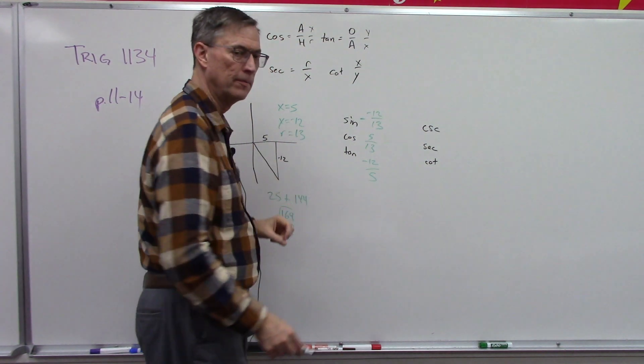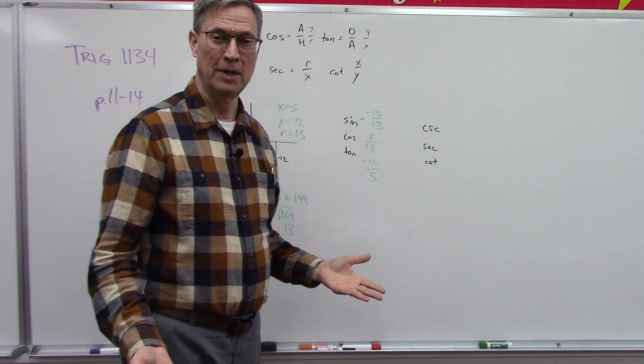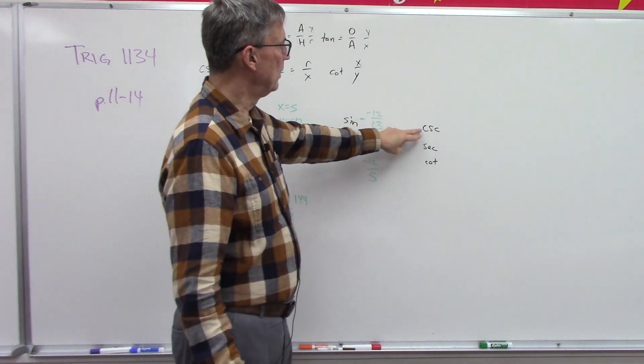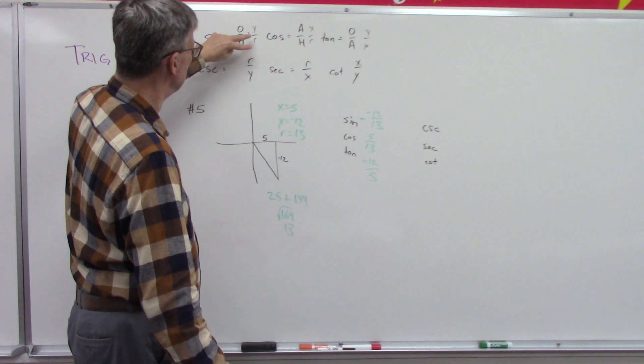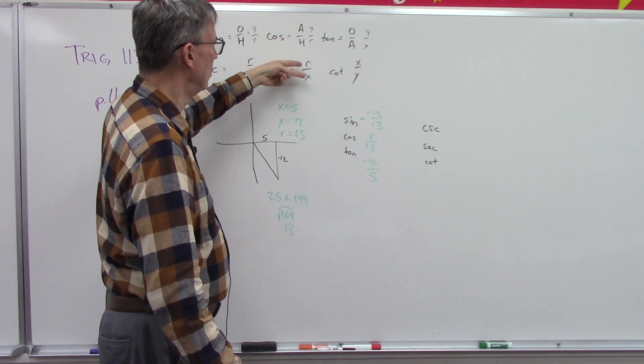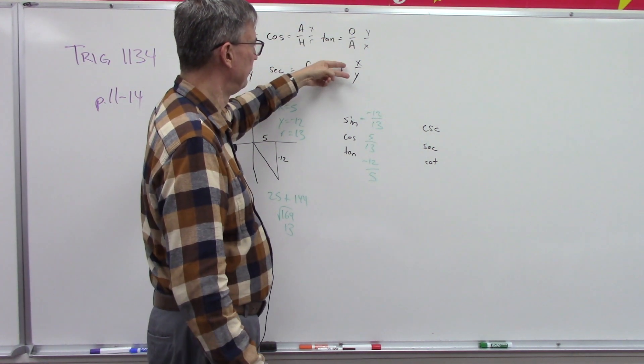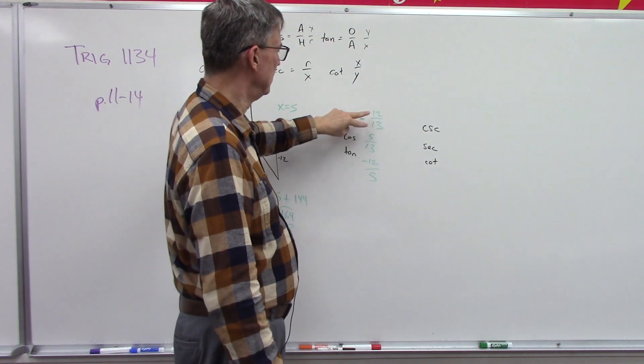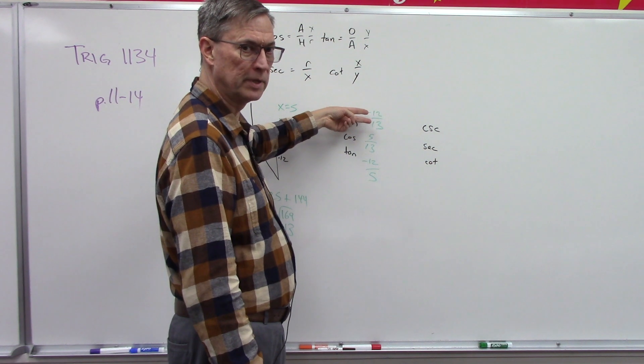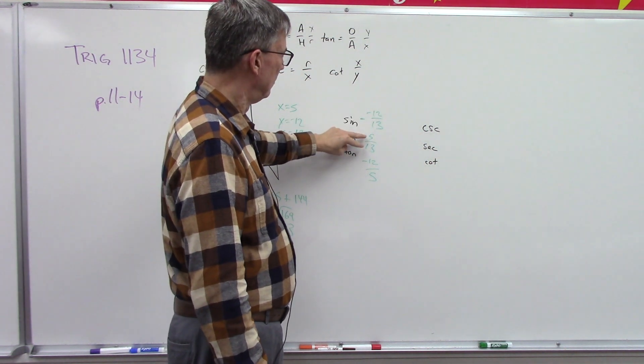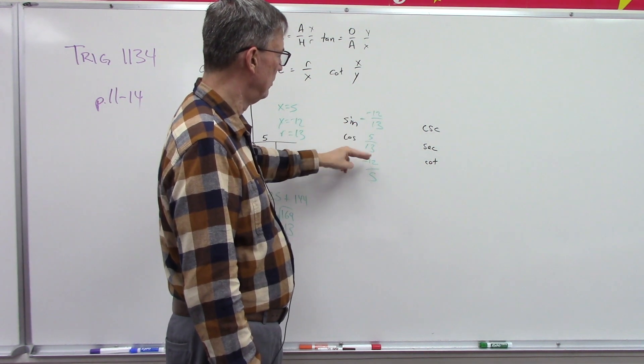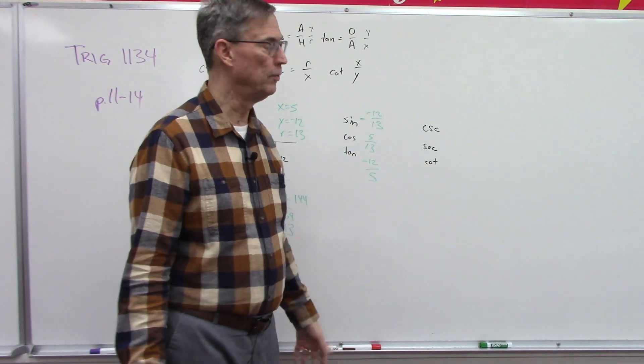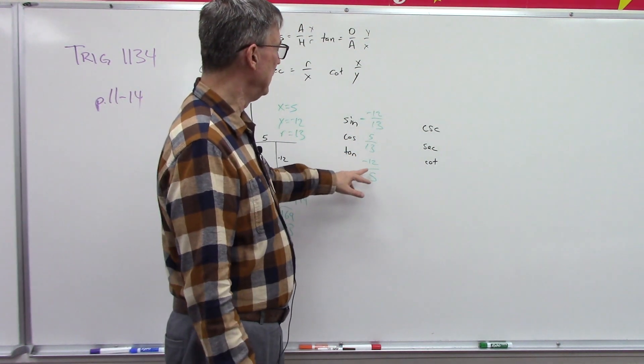Remember, cosecant is just flipping these - it's the reciprocal of this. So now you can see what cosecant is, you just flip it over, keep the negative with it: 13 over negative 12, 13 over 5, 5 over negative 12, which we would just write negative 5 over 12.